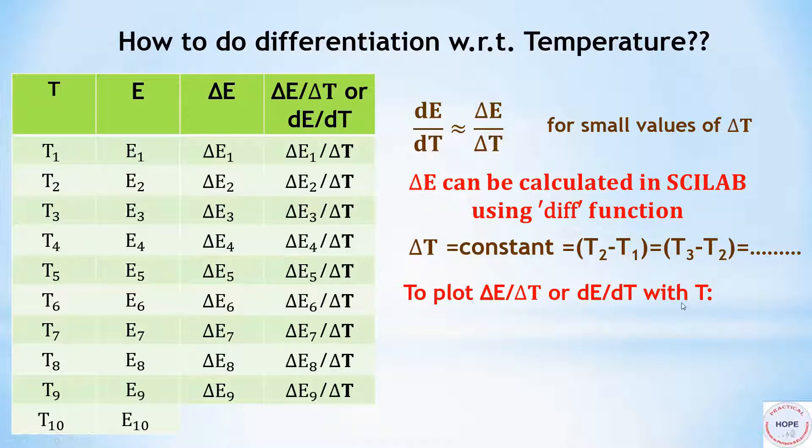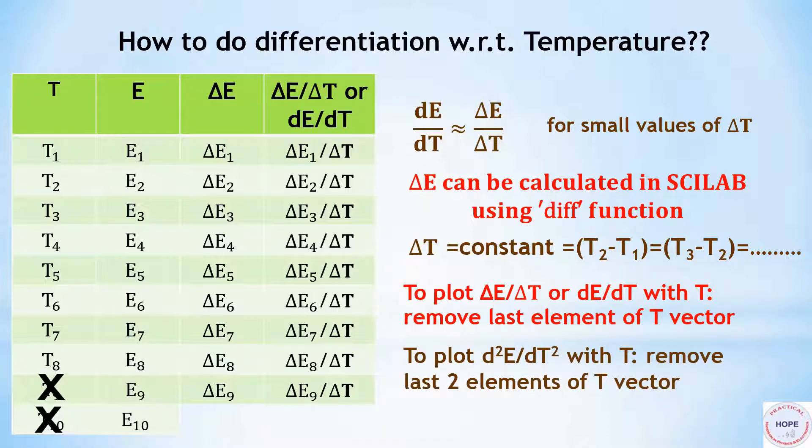Suppose we want to plot dE by dT with temperature. The number of points of dE by dT are one less than the number of points for temperature. So we have to remove the last element of vector T so that the dimensions of temperature values match with the dimensions of dE by dT. Similarly, to plot d2E by dT2 with temperature, we have to remove the last two elements of the temperature vector.